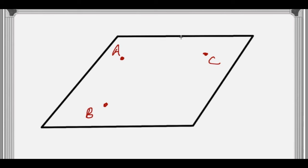We're going to talk about how to find the equation of a plane. What we have is a plane, which I'm representing with a parallelogram here, and three points in the plane: points A, B, and C.